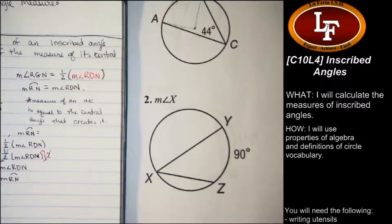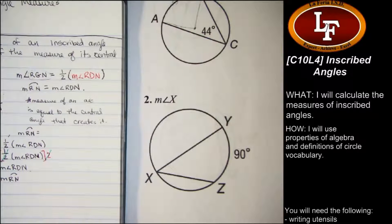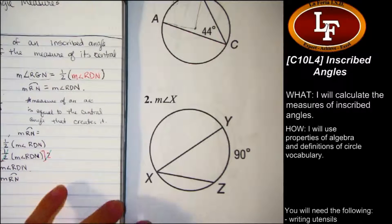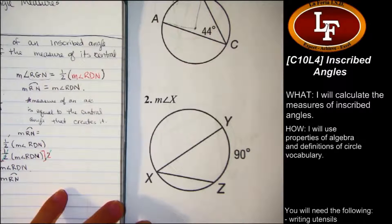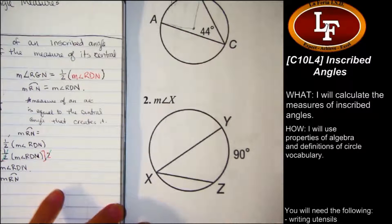Looking at number 2, you have something very similar, but this time you're given the measure of the arc and you're being asked to find the measure of the inscribed angle. Again, use that formula from before and it should be no problem.